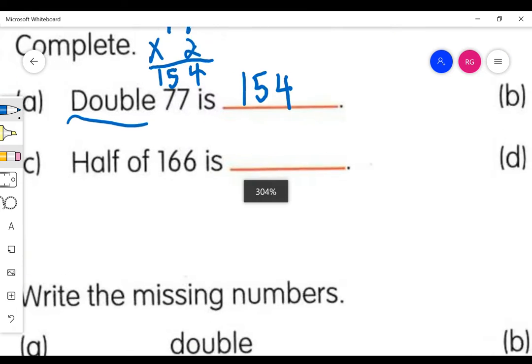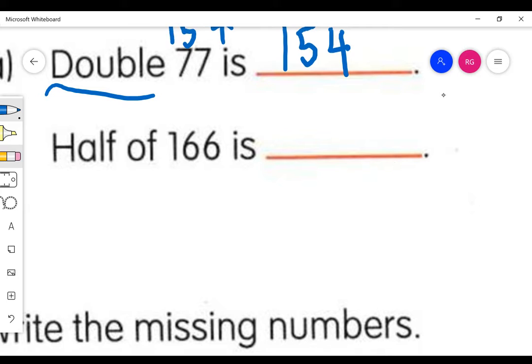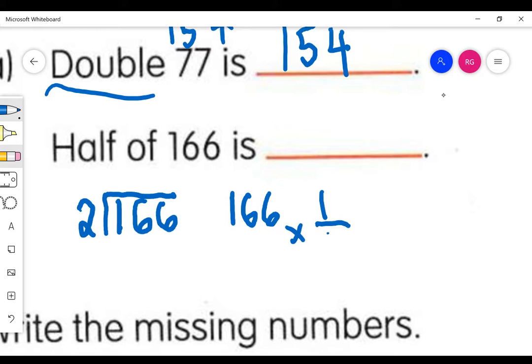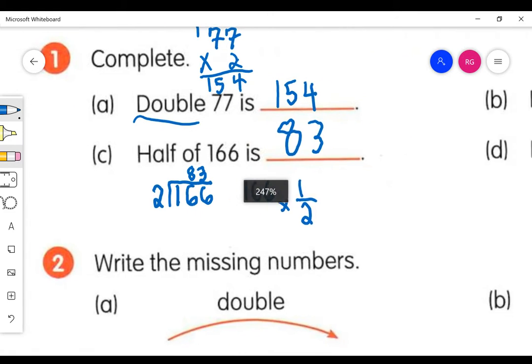And then for half, there's a few ways you can think about half. For one, you can think of it as 166 divided by 2. Or you could think of it as 166 times 1 half. Either way is fine. You'll get the same answer. You're going to end up taking 166 divided by 2, and you should get 83. So that is the answer for that one. Half of 166 is 83. We could do that in our heads probably.